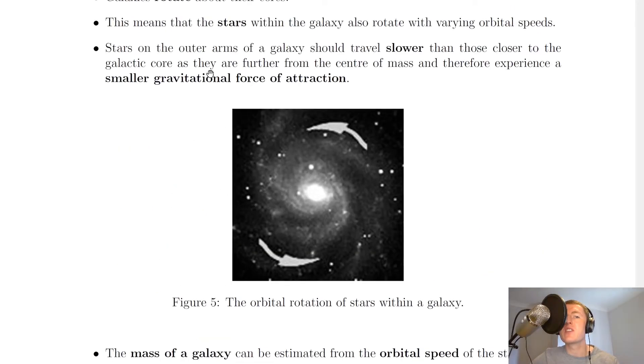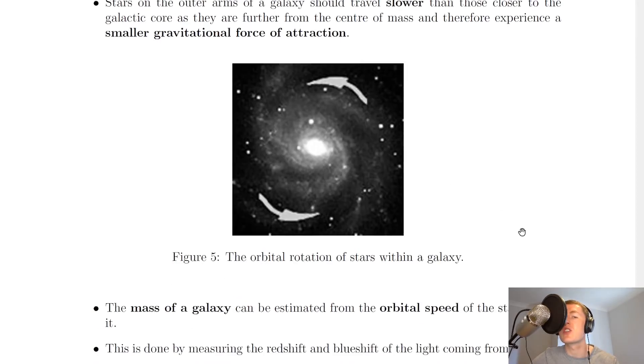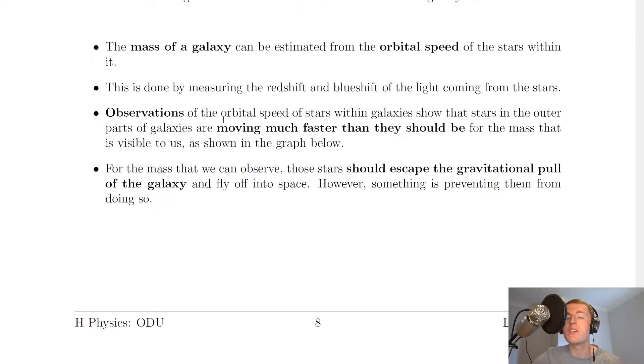Now relating back to this point here about stars travelling slower on the outer arms, it says that observations of the orbital speed of stars within galaxies show that stars in the outer parts of galaxies are moving much faster than they should be for the mass that is visible to us, as shown in the graph below.